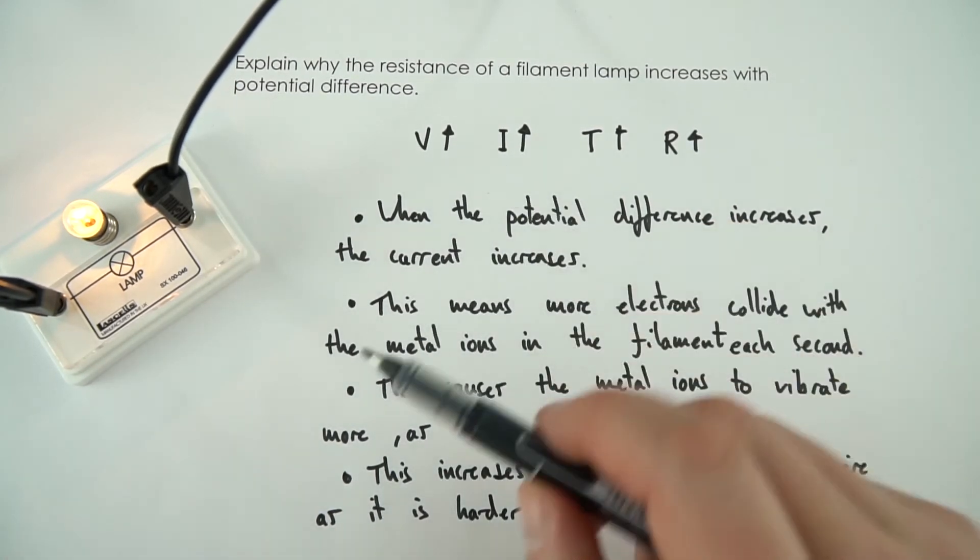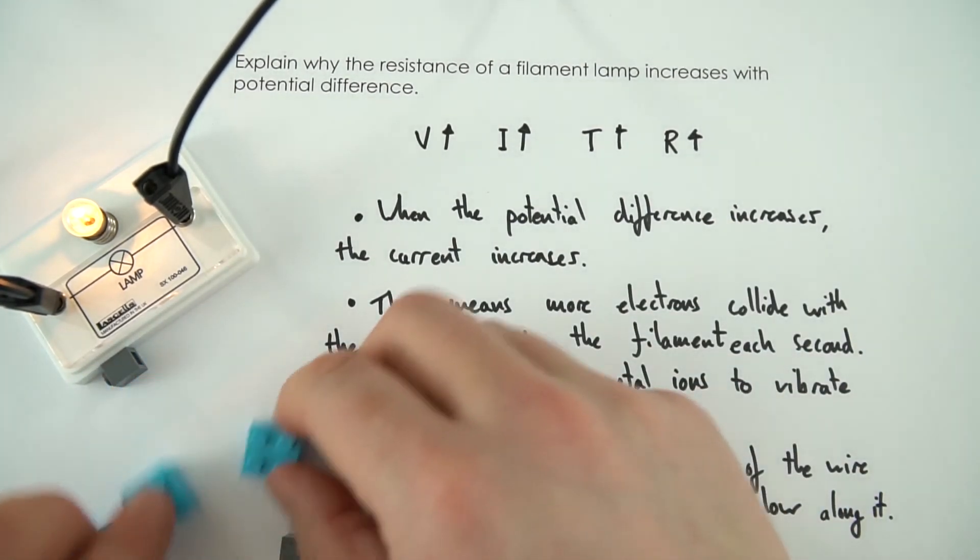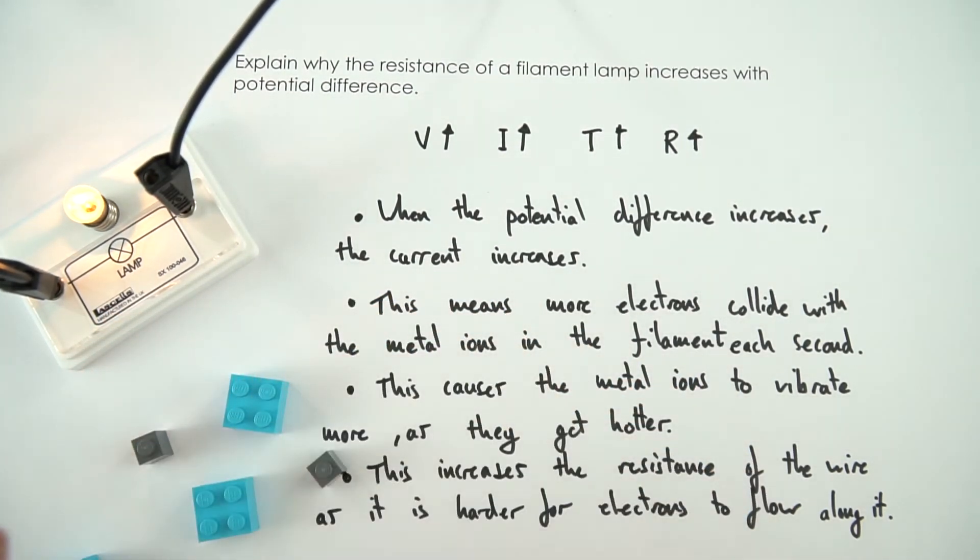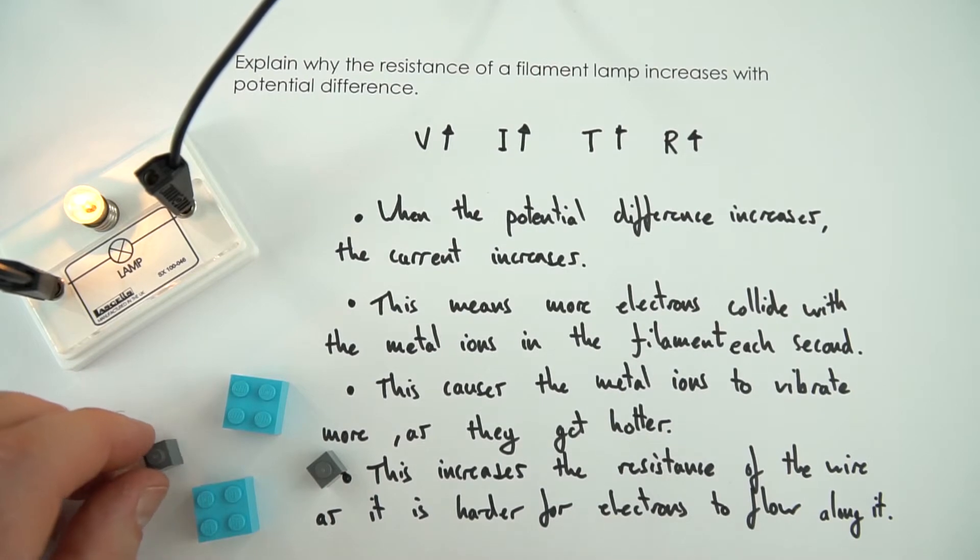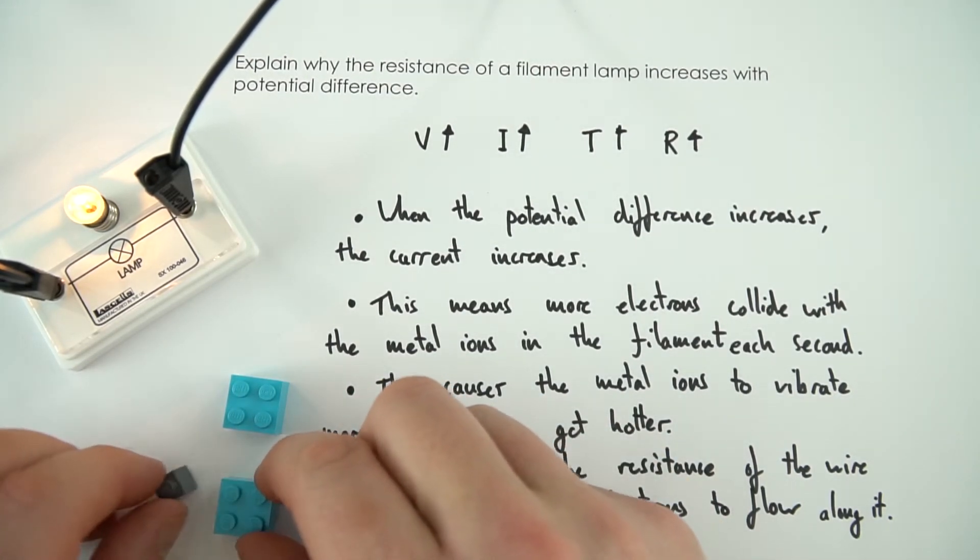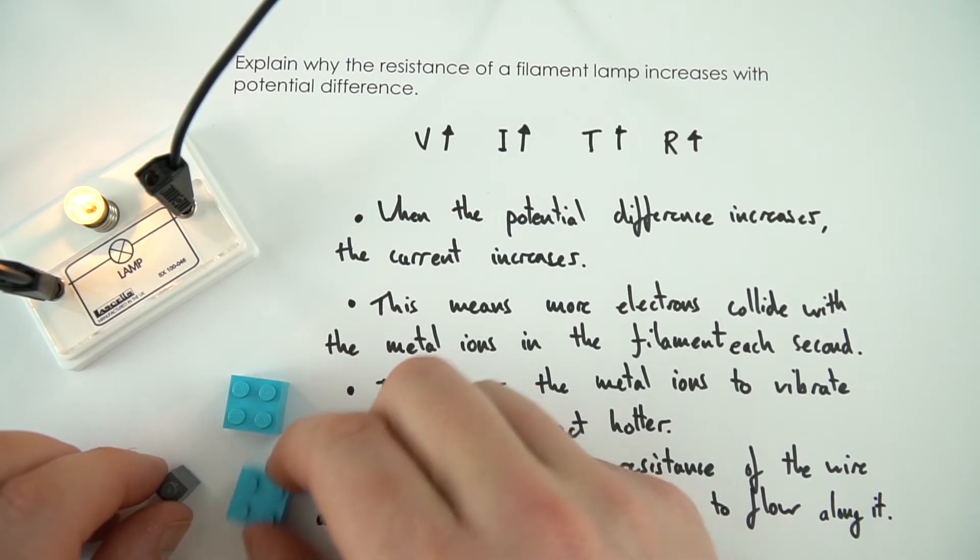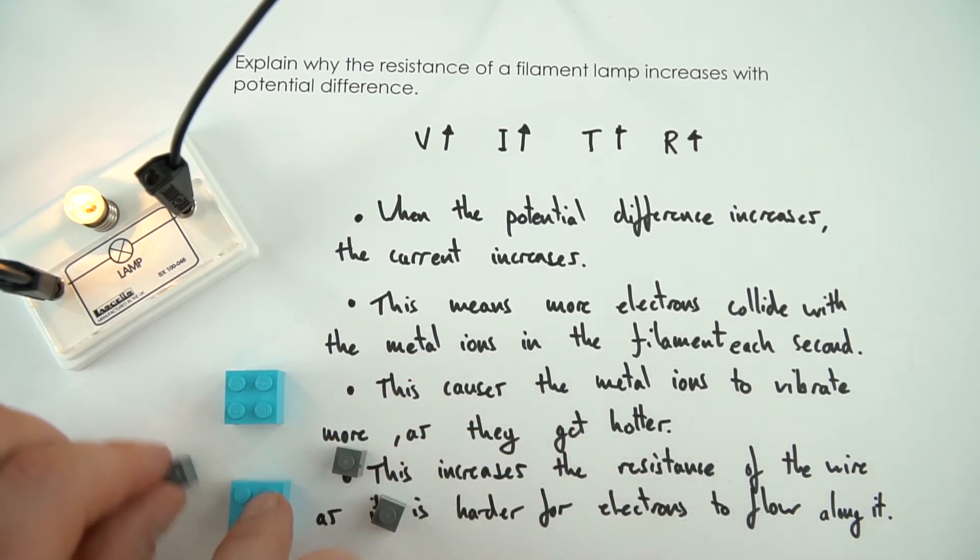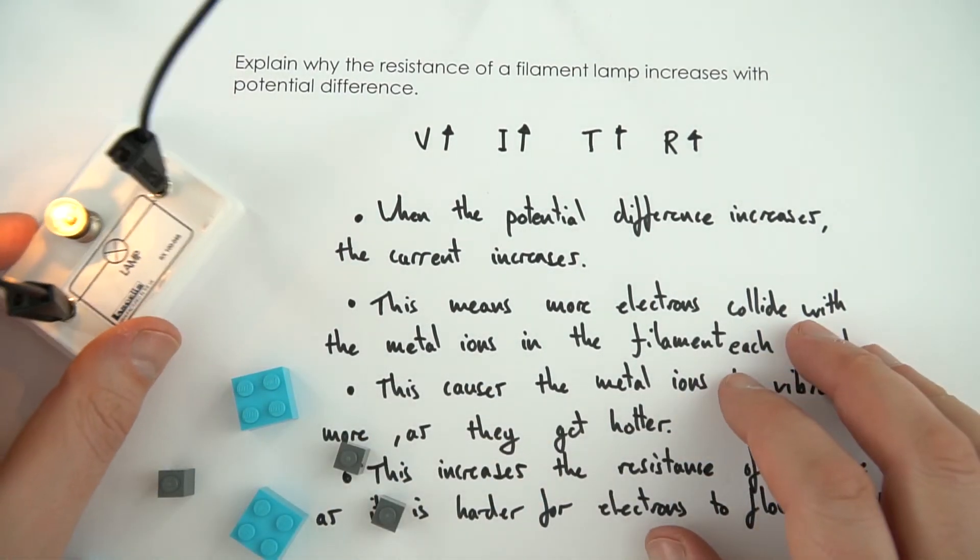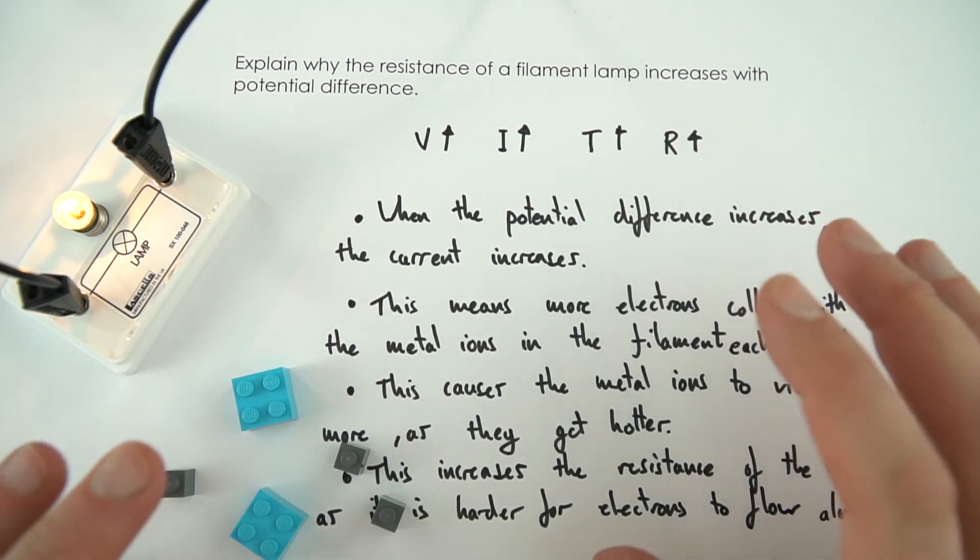The first thing I did was start with a bit of a model, trying to explain how you've got this metal lattice of ions, you've got the free electrons around it. As you have a greater potential difference, you've got a greater current flow. That means there's more electrons knocking into the lattice, causing it to vibrate even more. And then these electrons are now trying to pass the vibrating lattice, which is why the resistance increases. So quite an advanced question there, and that's just my approach to it.